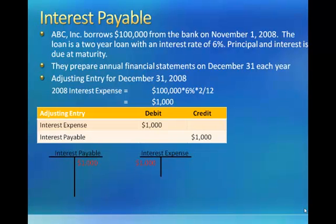Interest payable represents a liability, and interest expense reduces our income. If you did not make this adjusting entry, interest expense would be understated, which would overstate net income, and you would not be recording a liability, which would mean that your liabilities would be understated.